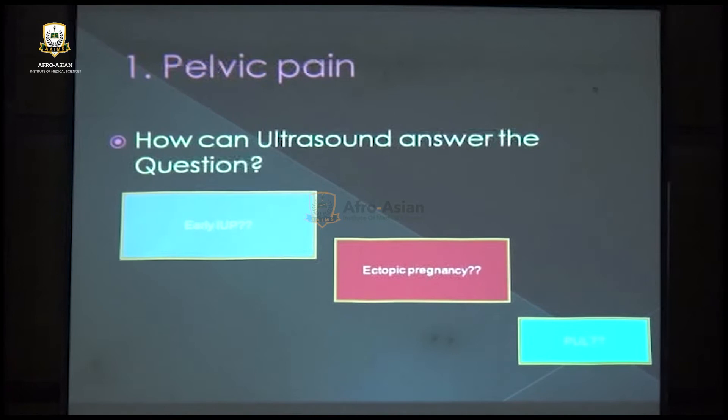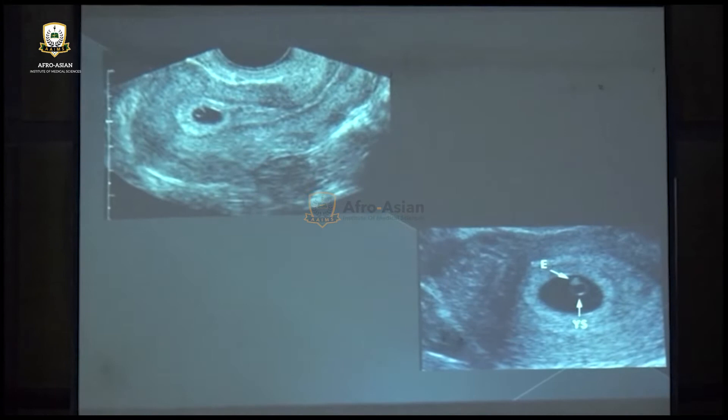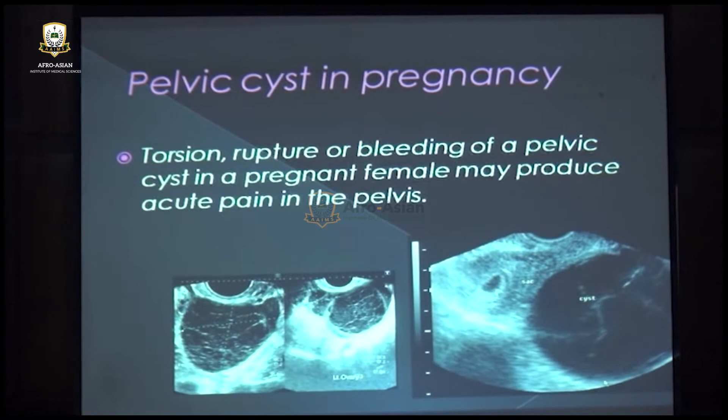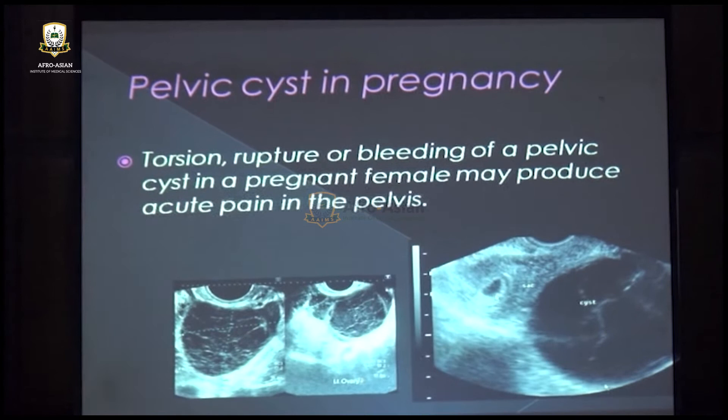In early intrauterine pregnancy, pain may be present. On endovaginal ultrasound, we can see the gestational sac, yolk sac, and embryo. Sometimes there is severe pain with a normal pregnancy inside the uterus, and at the adnexal region there is a large cyst — possibly a hemorrhagic cyst — which may rupture and cause lower abdominal pain.